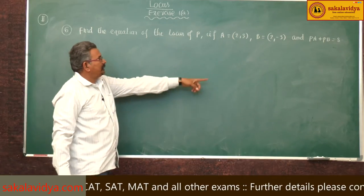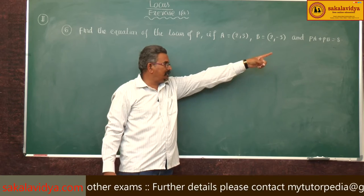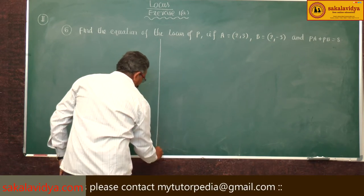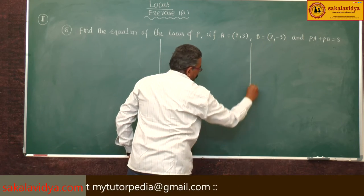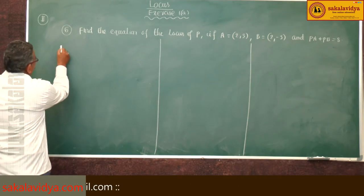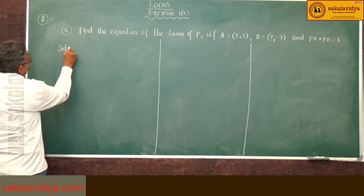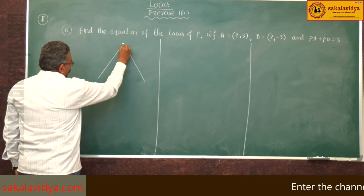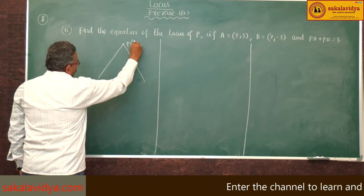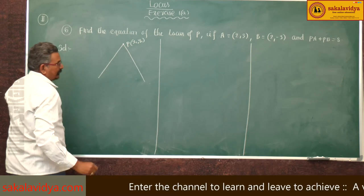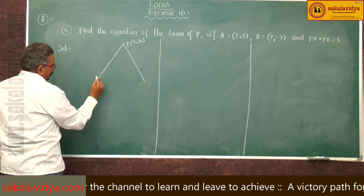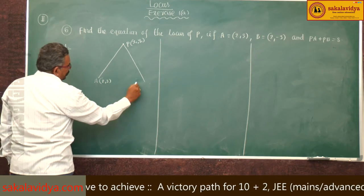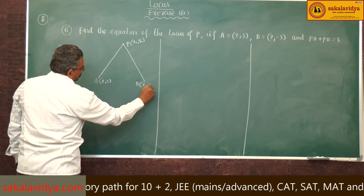Locus of P satisfying the condition PA plus PB equals 8 — we have to find the solution. Let this point be P(x1, y1). Given points: A(2, 3) and B(2, -3).